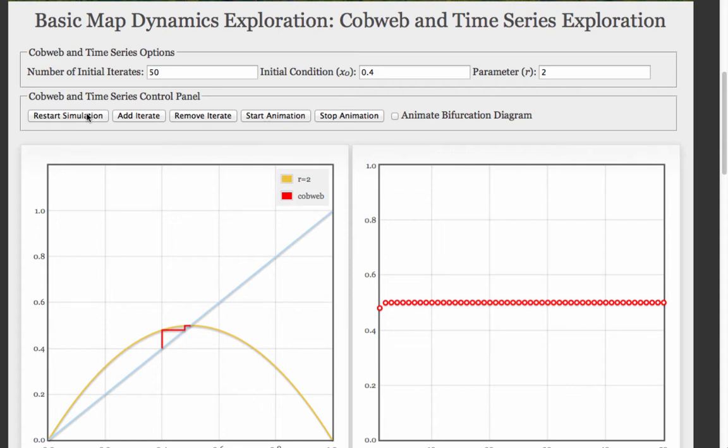It just changes the transient from the initial condition to the fixed point. All of the initial conditions that I just explored are in the basin of attraction of that attractor. They're all raindrops running to the same ocean.